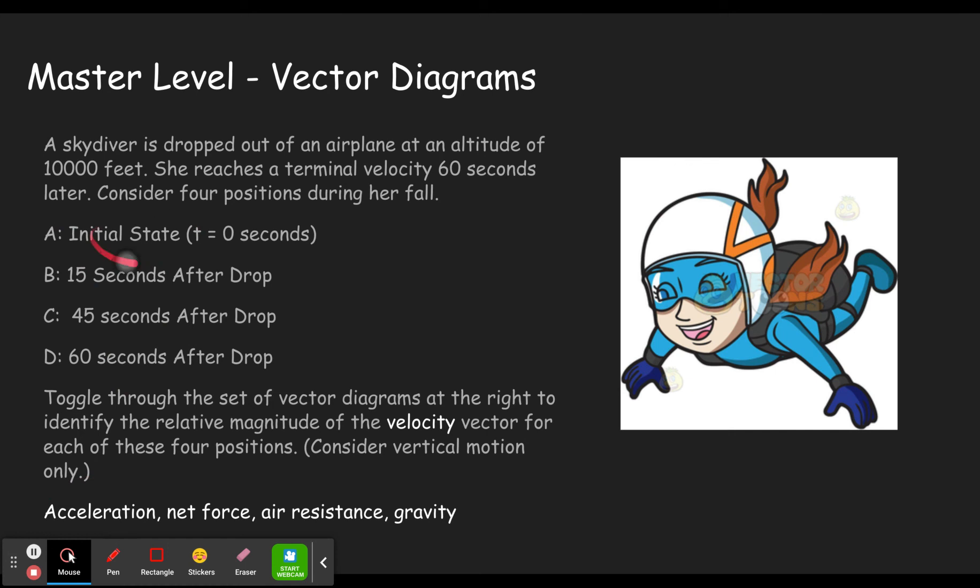The acceleration starts out at 9.8 meters per second squared, because the only force is gravity, but a split second later, as soon as there is speed, then there is air resistance, which is going to start to reduce the acceleration. Remember by the time you hit terminal velocity, then your air resistance matches your gravity. And so there will be no acceleration, no net force by the time you hit terminal velocity.